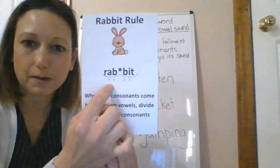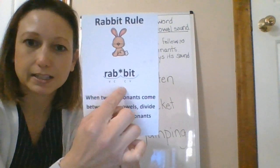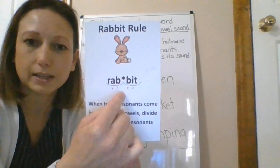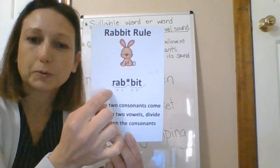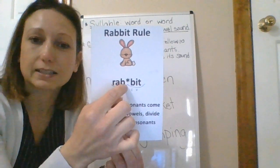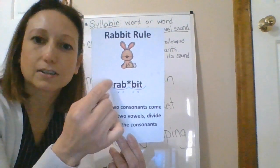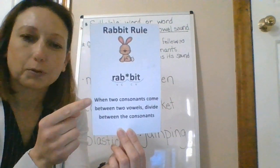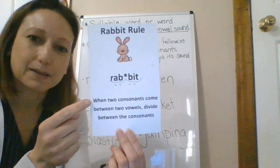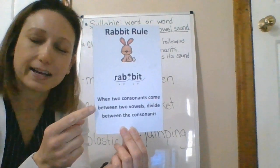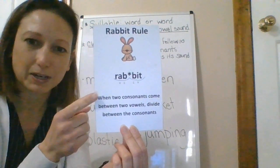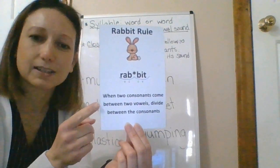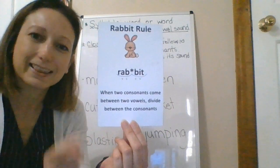You can see in 'rabbit' I have vowel, consonant, consonant, vowel. So I divided right between those consonants. My first syllable is 'rab,' my second syllable is 'bit' — rabbit. Our rule again: when two consonants come between two vowels, divide between the consonants. Say that with me: when two consonants come between two vowels, divide between the consonants.